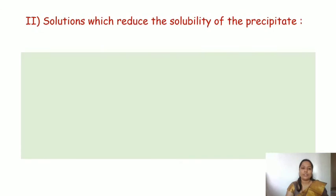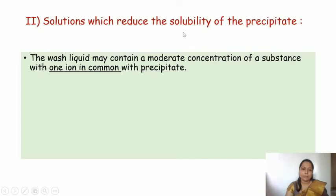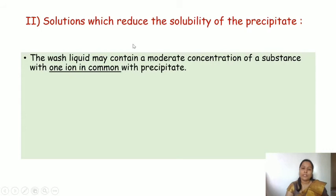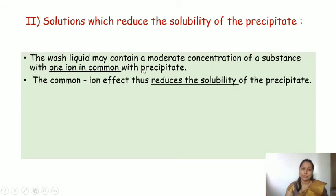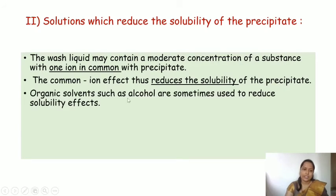The second class: solutions which reduce the solubility of the precipitate. We use a wash electrolyte that reduces the solubility of the precipitate. For example, the wash liquid may contain a moderate concentration of a substance with one ion in common with the precipitate. Due to the common ion effect, the solubility of the precipitate is reduced.